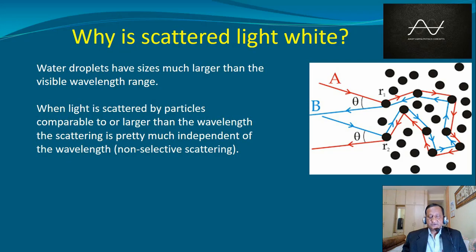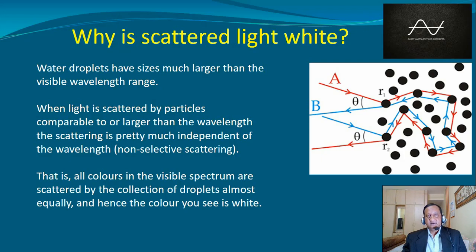Which means every single color in the visible spectrum gets scattered almost equally, hence white, because white is simply a combination of all the colors in the visible spectrum.